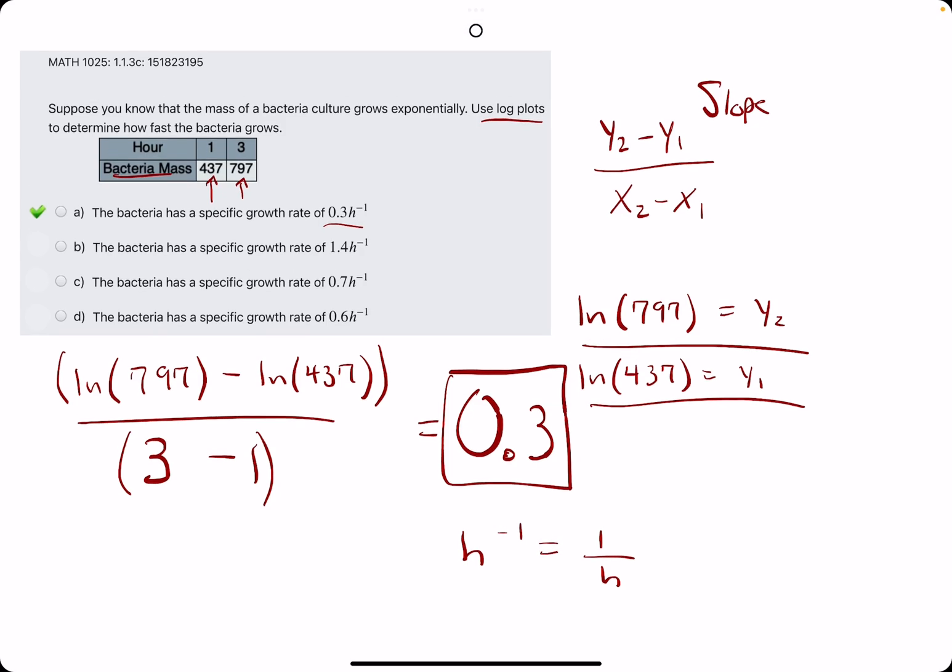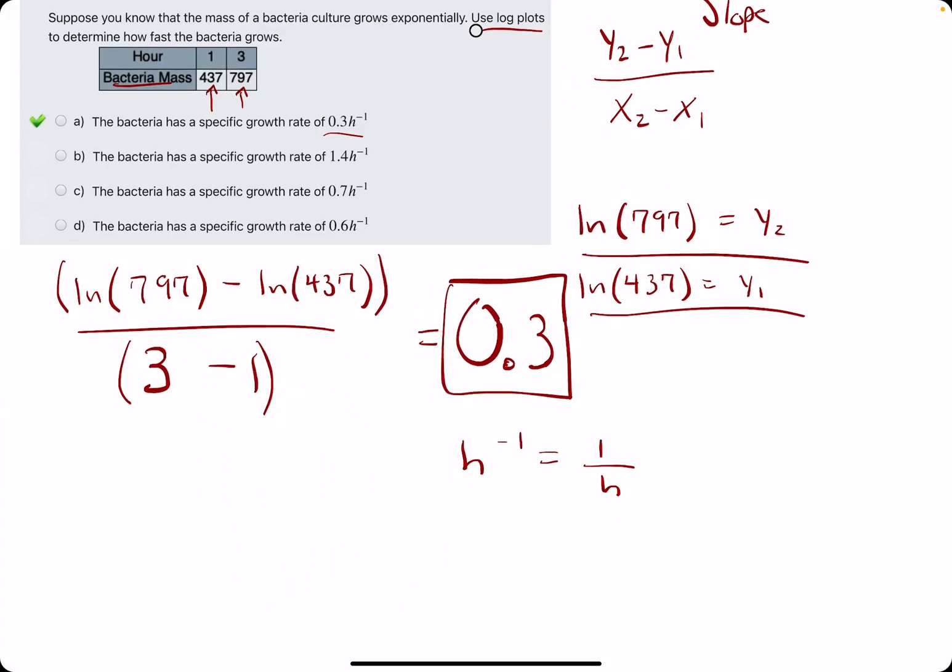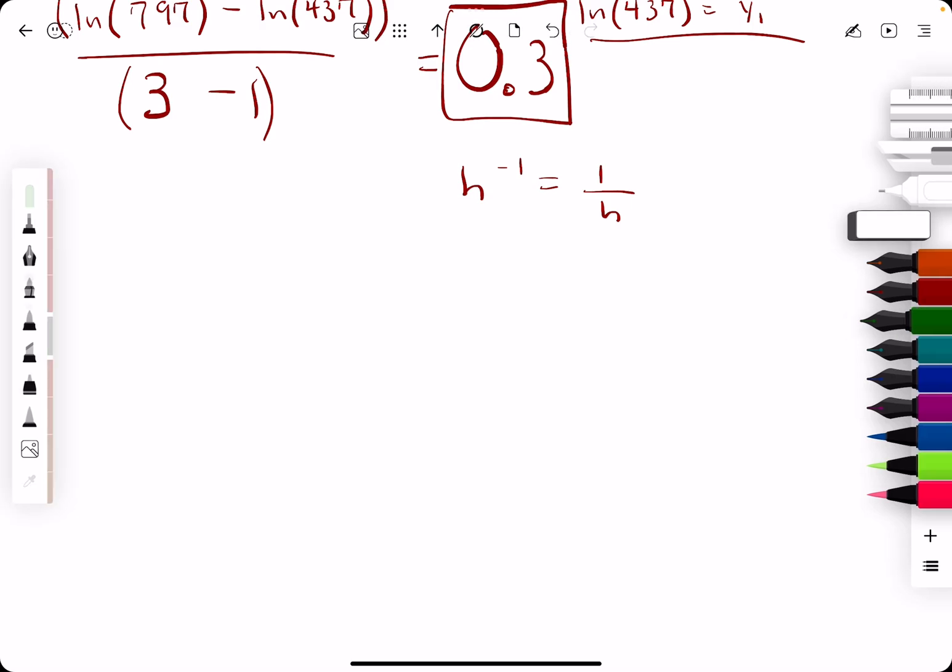So you might ask, that's kind of just the regular procedure. You might ask, why do we take the ln of both those values? Here's a little background if you're curious.